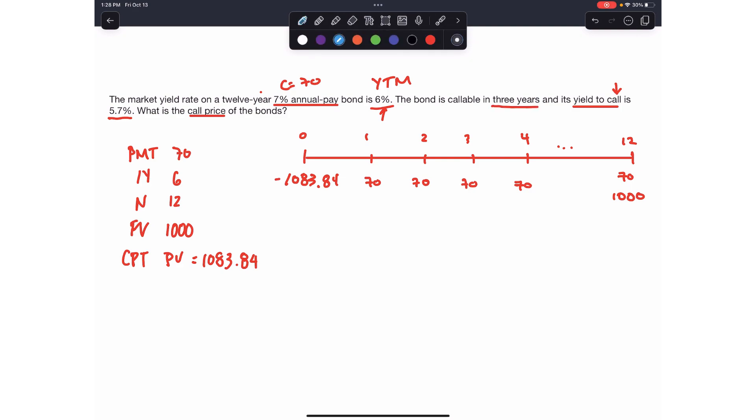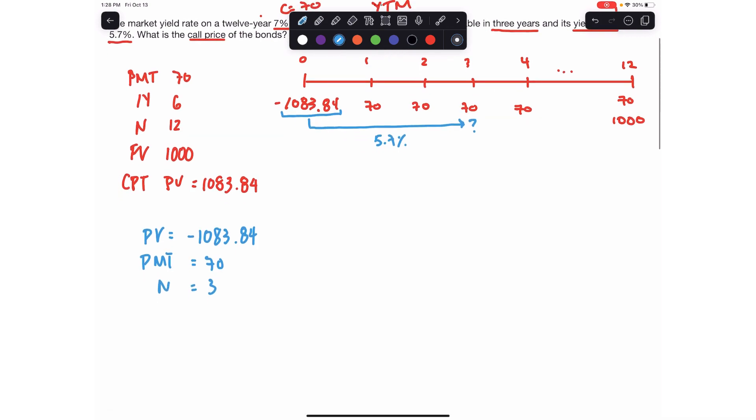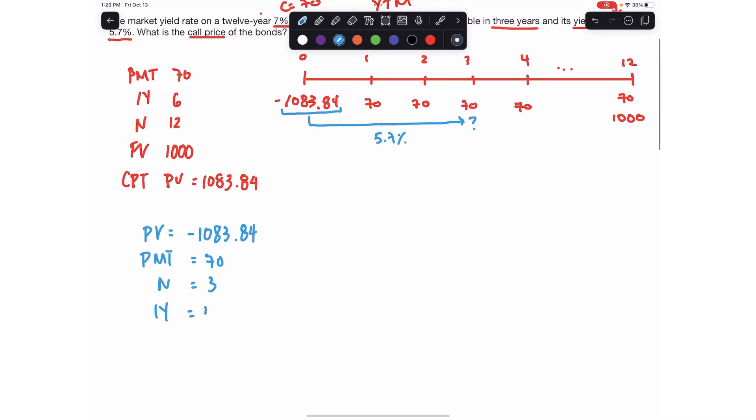So in order for you to answer this question, you basically want to find, what is the bond worth in three years? If I'm buying it today for $1,083, and I know that my three-year return up until here is going to be 5.7%, all you need to do is set your present value equal to the $1,083.84. The payments are the same because you're going to receive $70 payments, but only three times. The rate is the yield to call, so we're going to use 5.7, and you compute the future value.